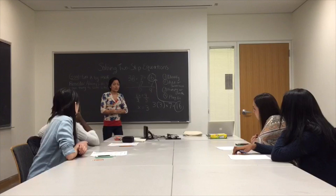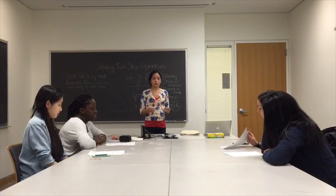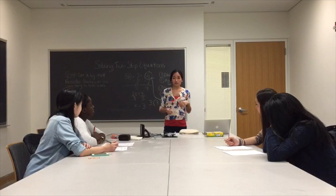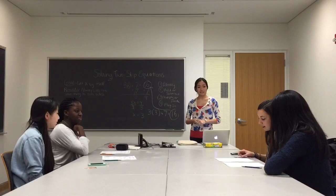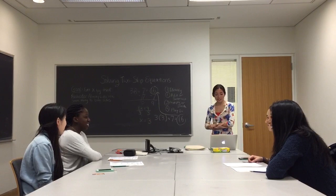Now it is your turn to try this out. Look at the worksheet I handed you and work on it with your partner. Solve the equation together, and when you're all done, make sure you plug in and check to see if you got the answer correct. Alright, now we are going to share our answers. This group over here, what did you get for x? We got 3. And what did you guys get? We also got x equals 3. Great, that must be the correct answer.